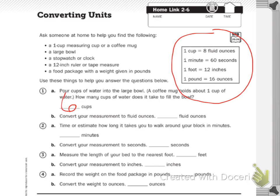So now it says convert your measurements to fluid ounces. I have one cup equals eight fluid ounces — I'm going to underline that in green. But I have six of them, so I need to do eight times six. Eight times six is 48, so I had 48 fluid ounces.